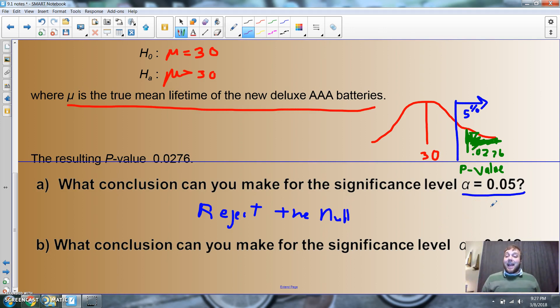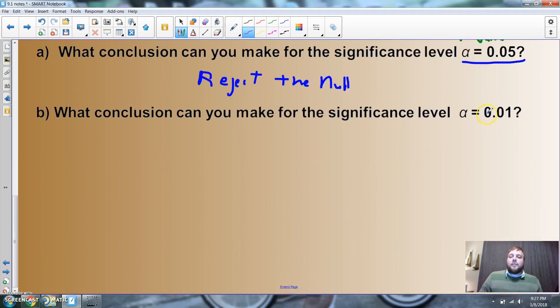If the p-value is low, the null must go. If the p-value is high - meaning higher than the significance level - the null will fly, or we're going to fail to reject it. Let's say that all together as a class. If the p-value is low, the null must go. But if the p-value is high, the null will fly.